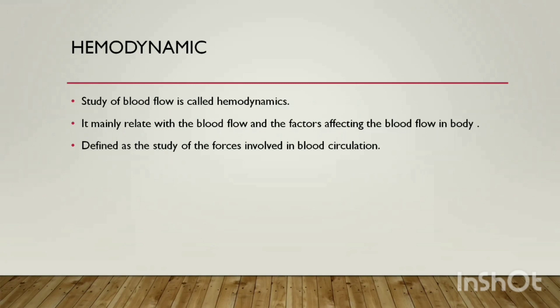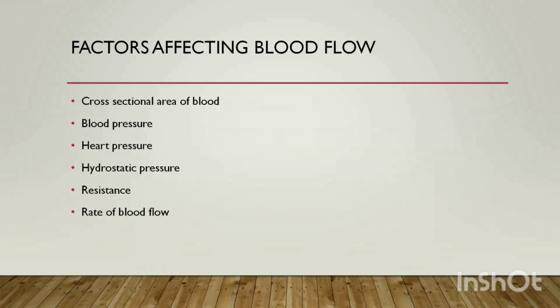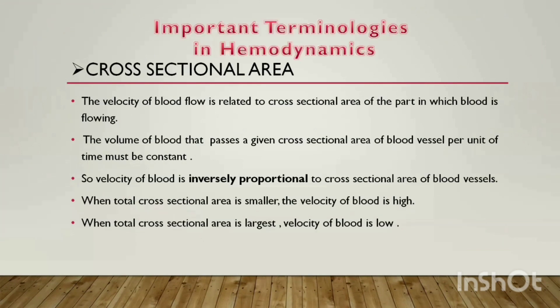We study the factors affecting blood flow: first is cross-sectional area of blood, then blood pressure, then heart pressure, then hydrostatic pressure, resistance, and rate of blood flow. Now there are some important terminologies which we need to understand in hemodynamics.